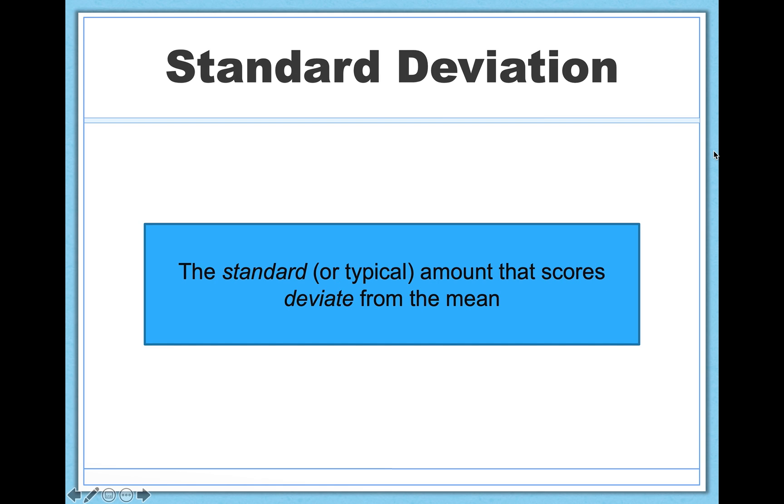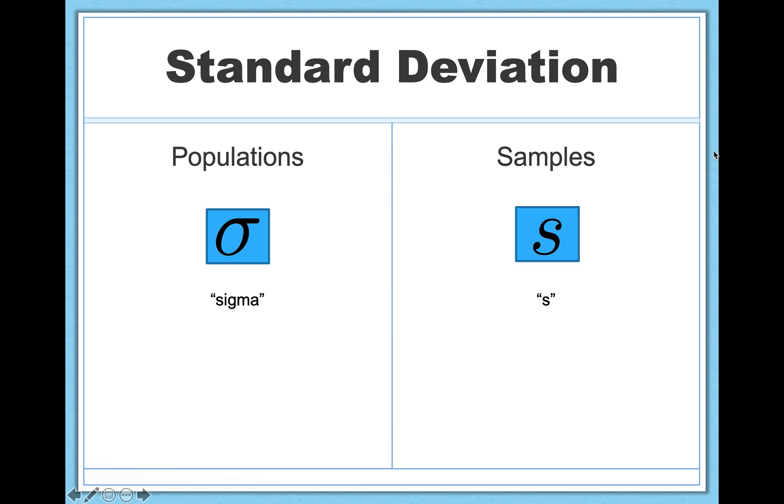Standard deviation, just like the name suggests, describes the standard or typical amount that scores deviate from the mean, hence standard deviation. Now we'll get into exactly what this looks like once we learn to calculate standard deviation. But I just want to show you some symbols for now. So like with means, we have different symbols to describe population standard deviation versus sample standard deviation. Population standard deviation is described by sigma. It's this sort of O with elvis hair I like to think of it as. Not to be confused with this sigma, which is a capital S. Unfortunately, they're named the same thing, which means take the sum of.